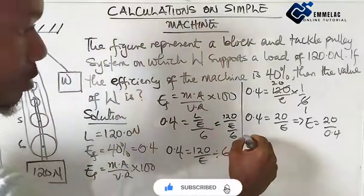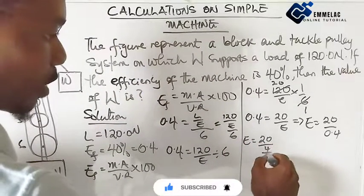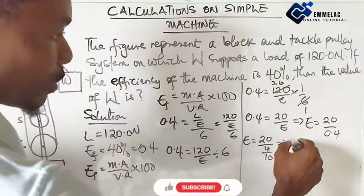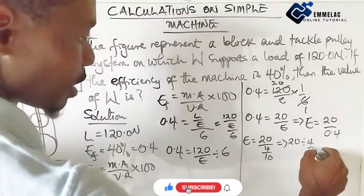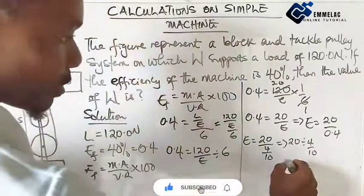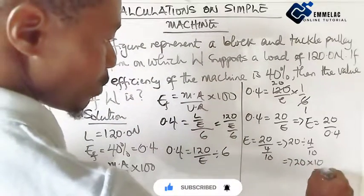Here we now say that E will give us 20 over 0.4, which will also imply that 20 over 4 over 10, which will give us 20 divided by 4 over 10.